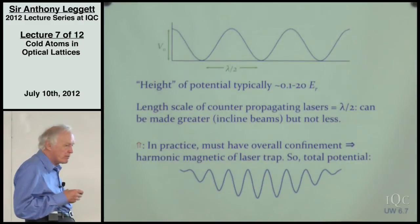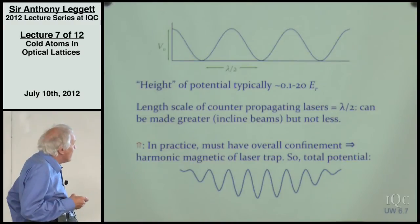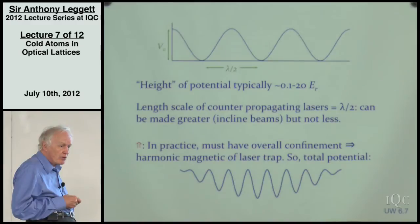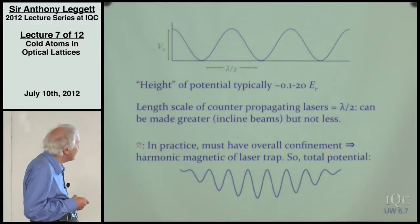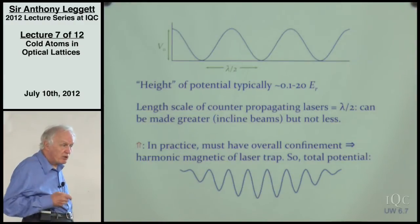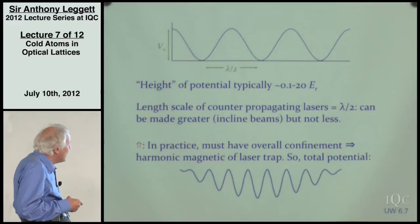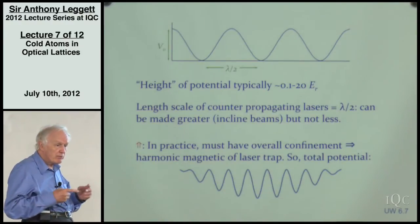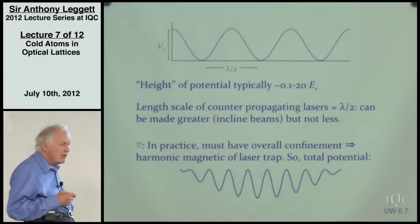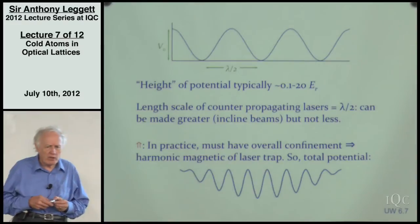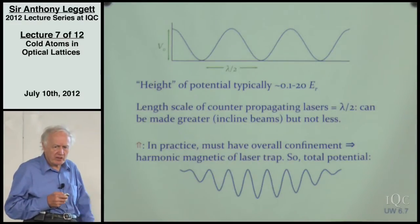You get a nice periodic potential in three dimensions. The height of the potential in experiments is typically anywhere from about 0.1 to 20 times the recoil energy. The wavelength of the lattice is half the original laser wavelength, due to interference of the counter-propagating beams. If you want a larger wavelength, you can incline your beams relative to one another, but it's impossible using these techniques to make the period smaller than that.